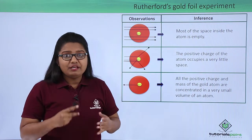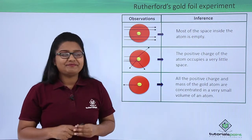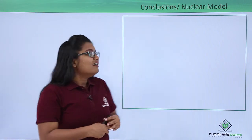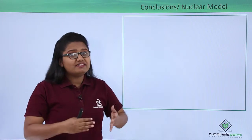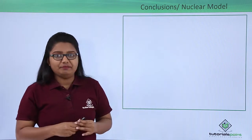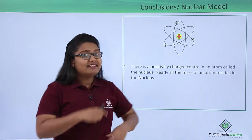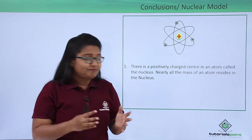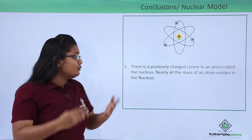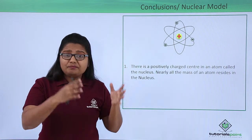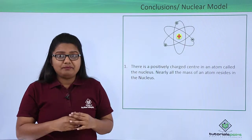Based on this he put forward the nuclear model of an atom. This nuclear model gave the conclusions he derived from his experiment. The first postulate is that there is a positively charged sphere at the center of an atom which he named the nucleus, and nearly all the positive charge and mass of the atom is concentrated into that point.